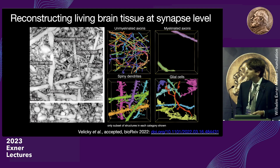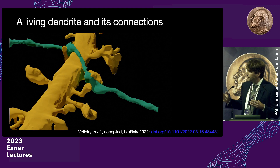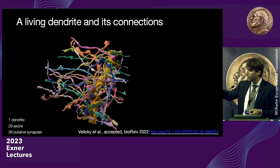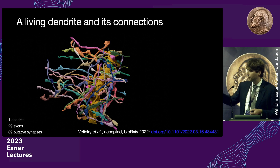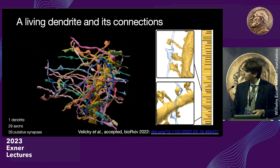I'll show you one of these dendrites. Every one of these processes is the site of one synapse, and you see how other neurons come in and provide their information. This is a short stretch — about 20 microns of a living neuron — and even on that very brief stretch, this neuron receives input from 29 axons, which make a total of 39 putative synapses.